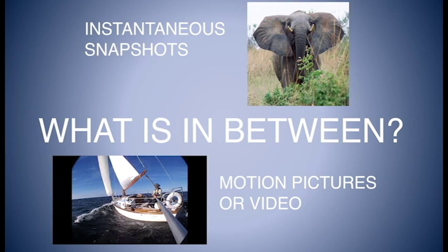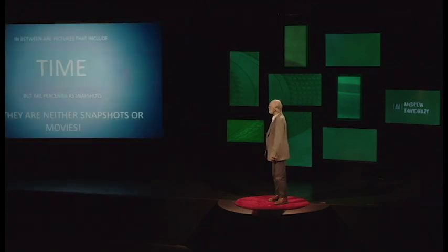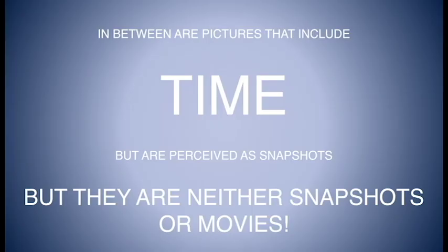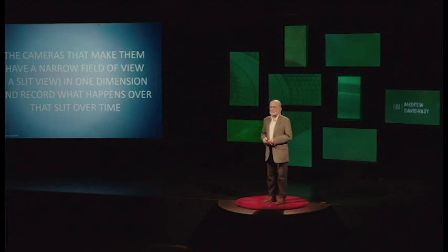Cameras of this kind that are between instantaneous and movies are pictures that include time but are neither snapshots nor videos. How do they do this? They do this by throwing away one of the dimensions of a regular two-dimensional view. They concentrate their view on a narrow vertical line and they record what happens over that opening over time.